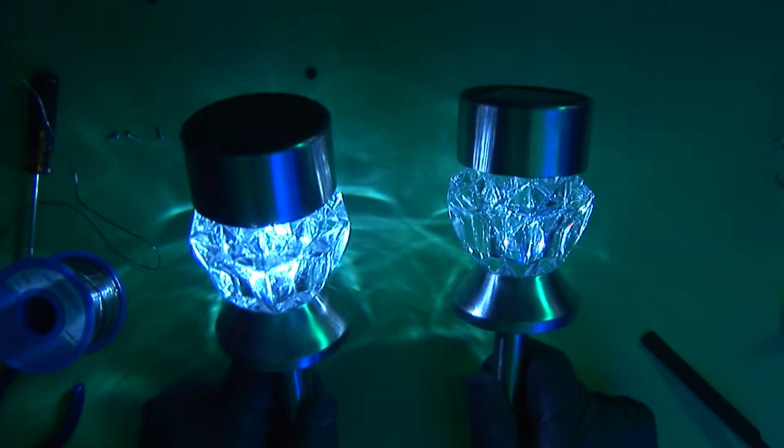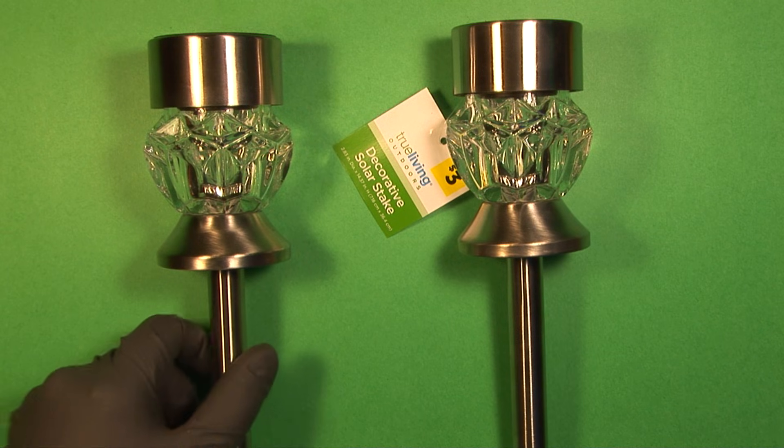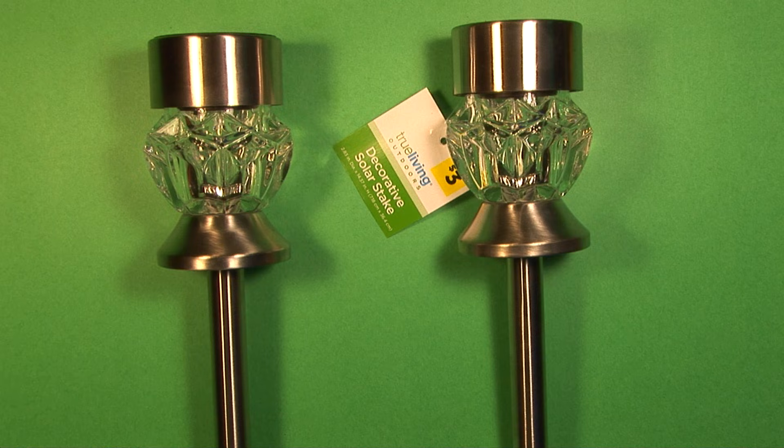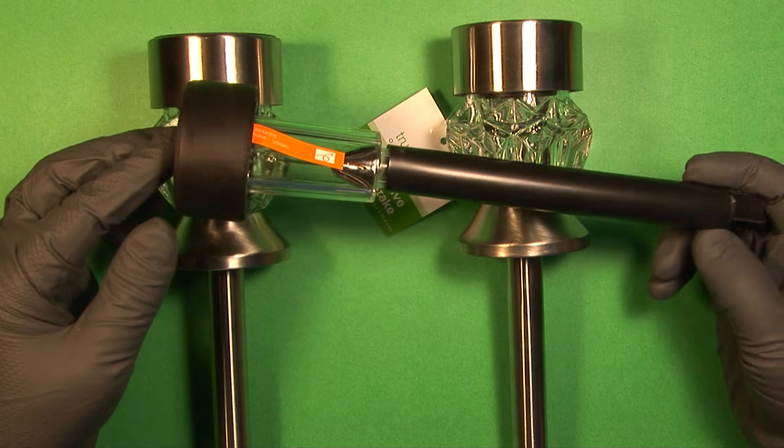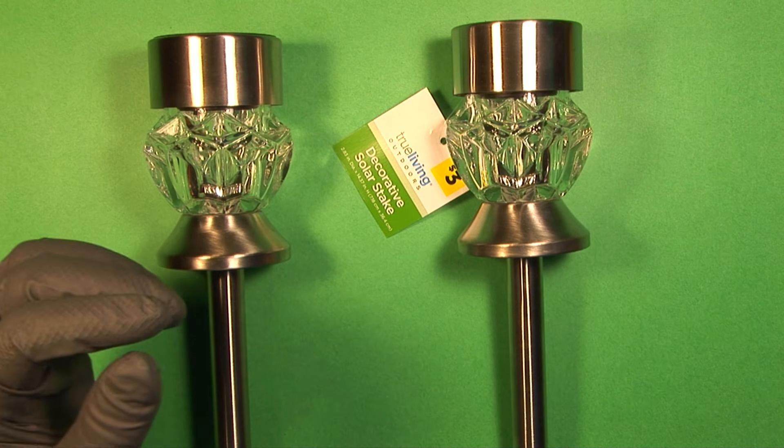Just by doing that, look at the difference in brightness. These solar garden pathway lights that you can pick up for only a few dollars a piece seem like a very good deal, and you can actually get other ones that are cheaper. These I got for about a dollar a piece.